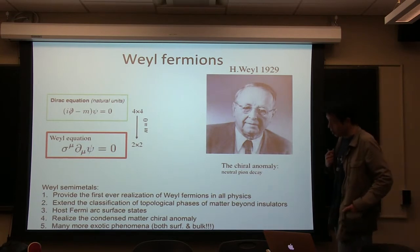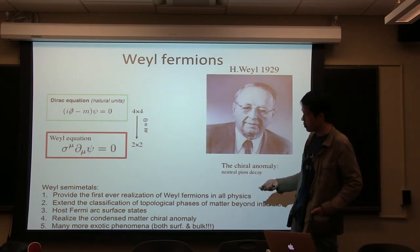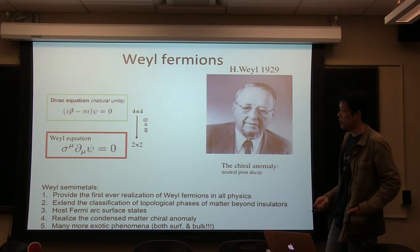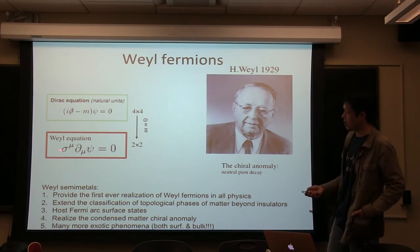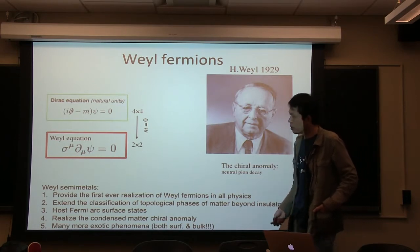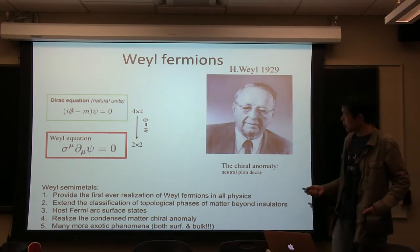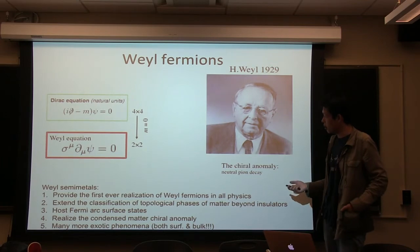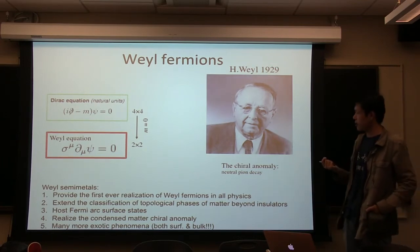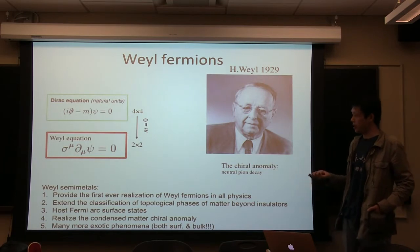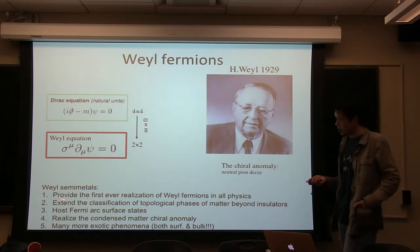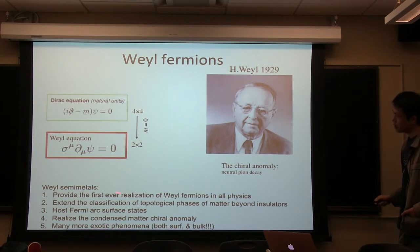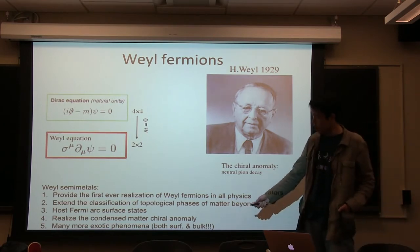Solving the Weyl equation gives a 2×2 massless fermionic particle with definite chirality — either left-handed or right-handed. That is the Weyl fermion. Weyl fermions play a very important role in particle physics, like the standard model, but have never been observed as a fundamental particle in particle physics. Therefore, Weyl semimetals in condensed matter actually provide the first-ever realization of Weyl fermions in all of physics, and they have many exciting properties.